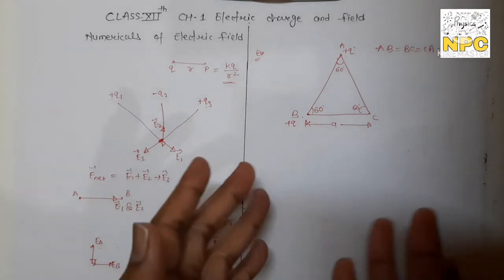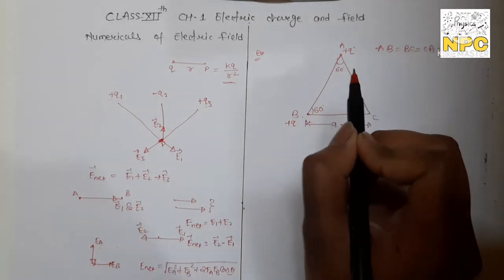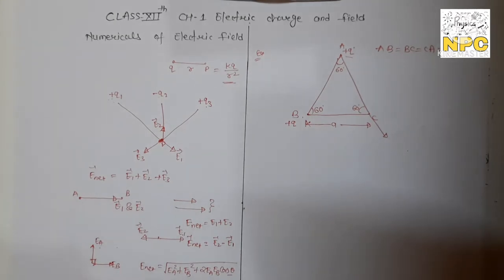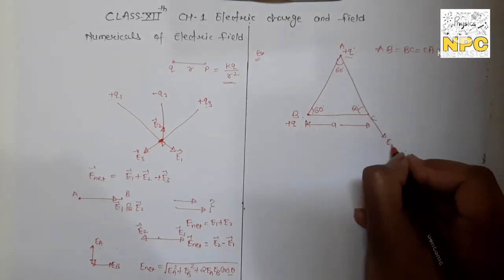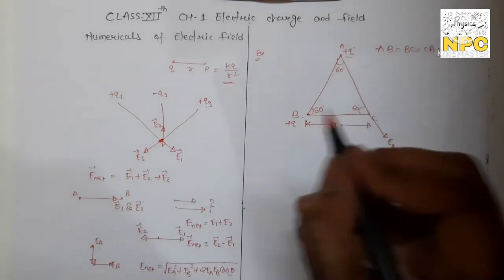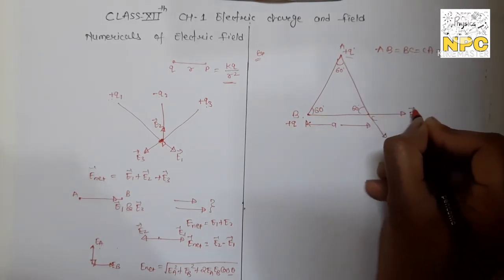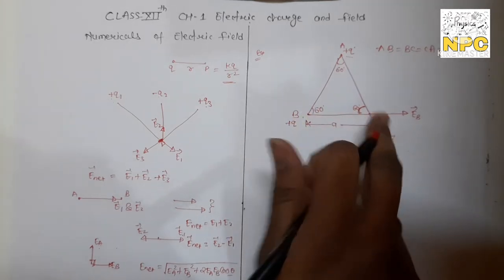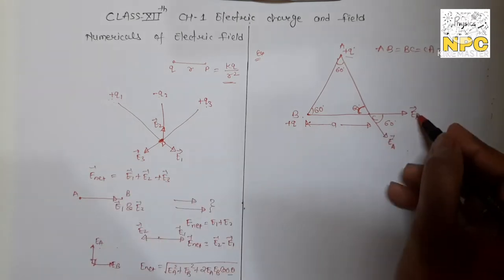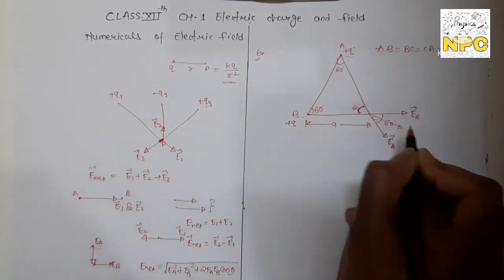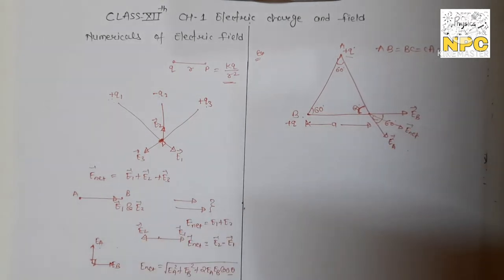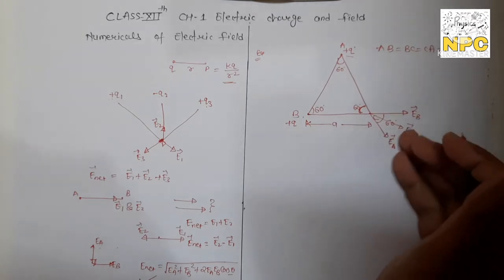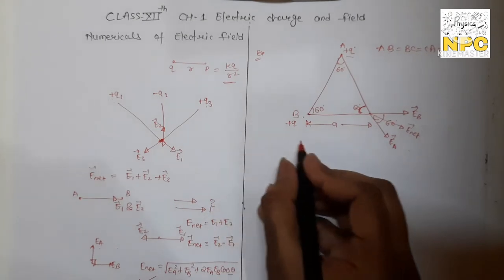Now calculate E_A and E_B. E_A = KQ/A² (distance from A to C is A, the side length). Similarly E_B = KQ/A². Since both are equal, let E = KQ/A². Now apply the vector formula: E_net = √(E² + E² + 2E²·cos60°). cos60° = 1/2, so 2E²·(1/2) = E². Therefore E_net = √(2E² + E²) = √(3E²) = E√3. So E_net = √3 · KQ/A².